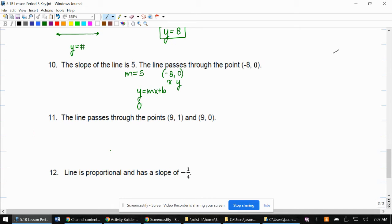So y is 0, m is 5, x is negative 8, and we're going to solve for b.